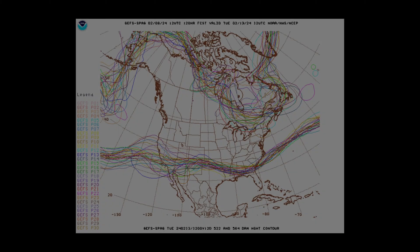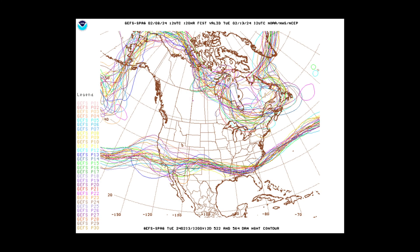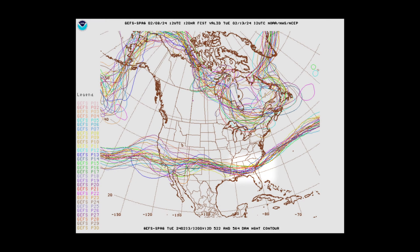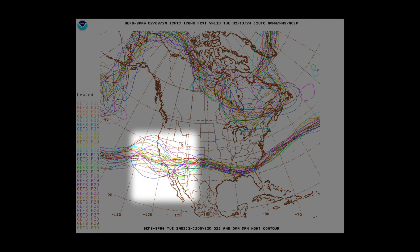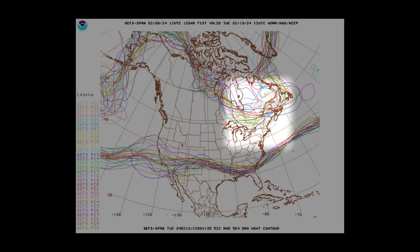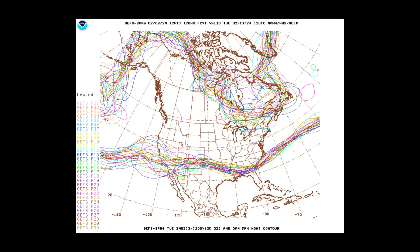In this example, there is impressively good agreement in the 500 hectopascal geopotential height pattern from the GEFS for a 120-hour forecast in the southeastern United States, where the contours are fairly close together. However, across California into the Four Corners region and over New England, there is more dispersion among the members, indicating greater uncertainty.